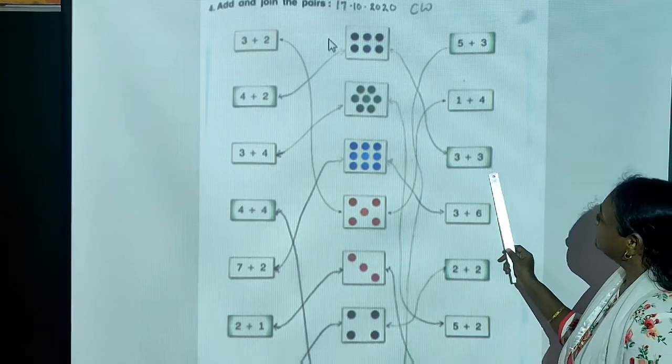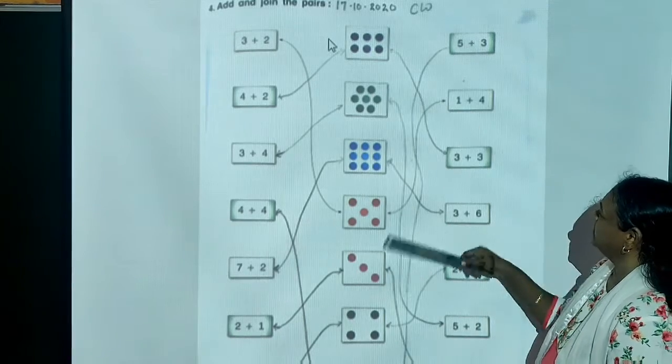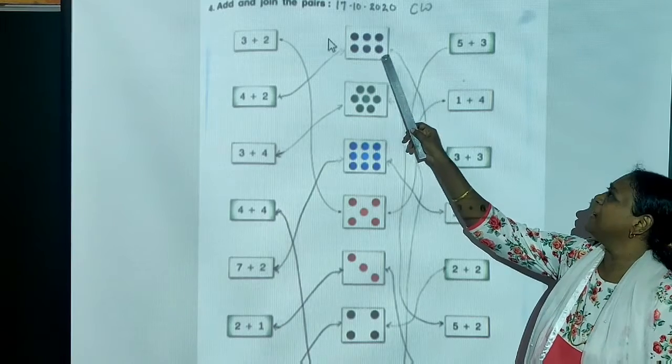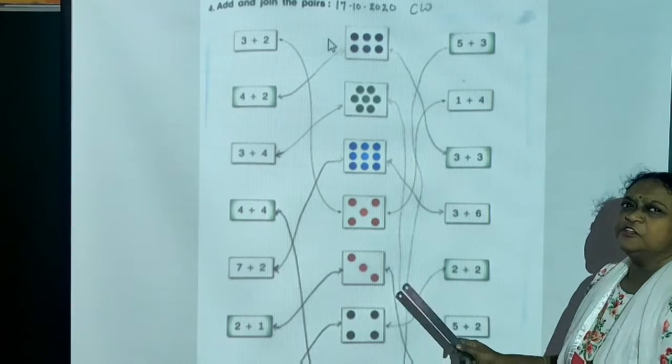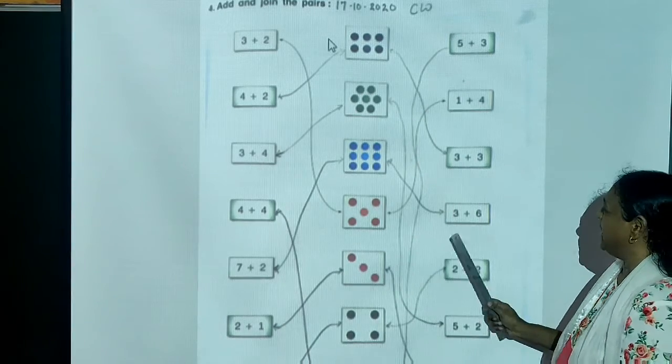4 plus 1 equals 5. So, where is 5? Come on, come on. Yes. Count 1, 2, 3, 4 and 5. 3 plus 3 equals 6. Now, you have to find. See, 1, 2, 3, 4, 5, 6. So, like this, you have to always count and match this.